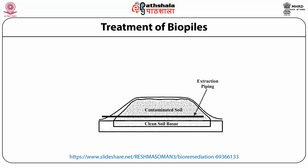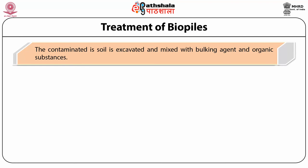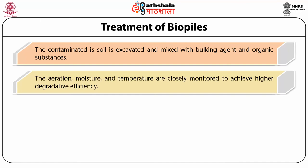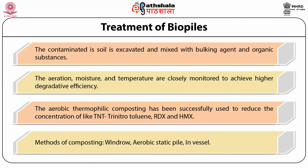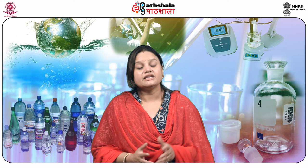The gas released from this composting process is treated before being released into the atmosphere. The contaminated soil is excavated and mixed with a bulking agent and organic substances like wood chips, animal waste, and vegetative waste. Aeration, moisture, and temperature are closely monitored to achieve higher degradative efficiency. Aerobic thermophilic composting has been successfully used to reduce the concentration of TNT, RDX, and HMX. Composting has also been used to treat sewage sludge, soil contaminated with diesel, waste from antibiotics fermentation, and waste from processing units. Methods of composting include windrows, aerobic static pile, and in-vessel.